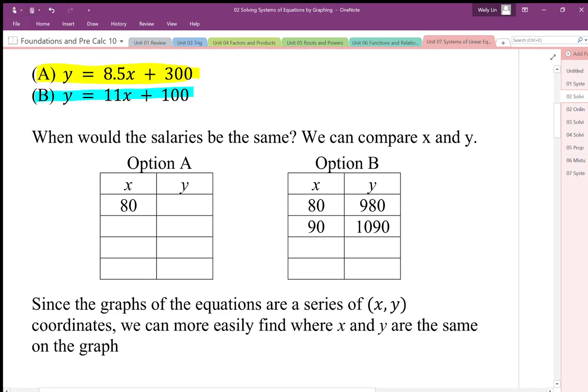So if I look at option A, I'm going to multiply 80 hours by 8.5. So it's going to be 80 hours times 8.5. That's going to give me $680 plus the original $300. So I'm going to earn $980. So it looks like that's going to be when they're the same. So option A and option B. It looks like option B, when I calculate 80 times 11 plus 100, that's going to be same.